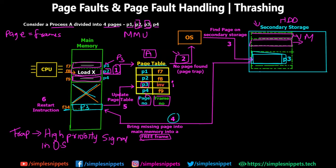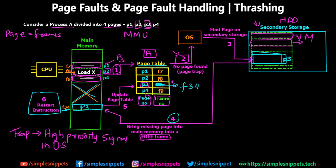For step four we loaded P3 into main memory. Now for step five we update the page table — we add an entry with the frame number in which P3 is loaded, which is F34. Step five is complete. The last step, step six, is to restart the instruction: the CPU restarts 'load X' and now finds P3 in memory because it is in the page table. The CPU then executes page number 3. This is the entire page fault handling scenario.